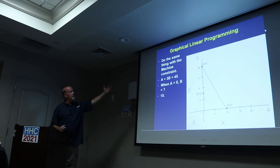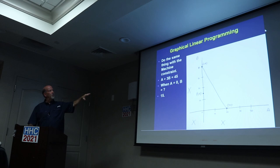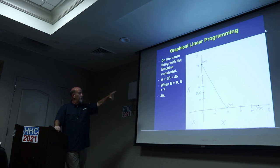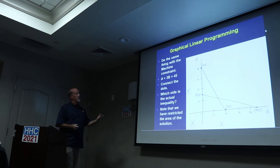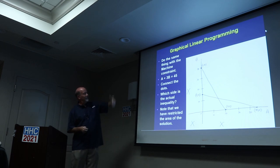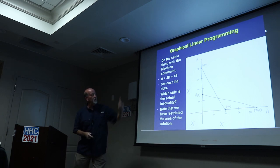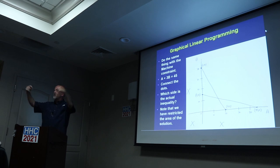Do the same thing with the machine time constraint. That was 1A plus 3B equals 45. When A is equal to zero, 45 divided by 3, B is 15. So I've got 0 comma 15. And when B is zero, A has got to be 45. Connect my dots. Which side of that is the actual inequality? It's got to be less than 45, so it's got to be out here. So we have restricted the area of the solution already.